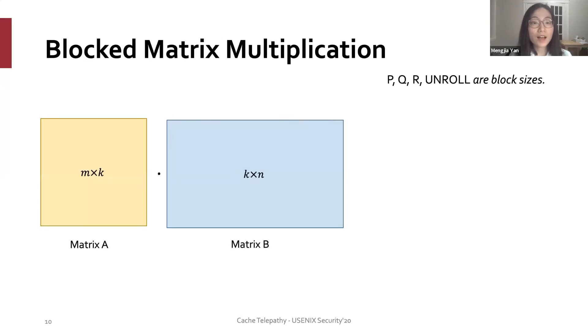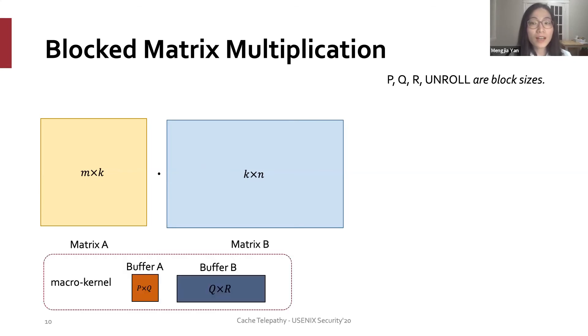Here is how the blocked GEMM works. In order to multiply m by k matrix A and the k by n matrix B, the algorithm tries to use a micro kernel on the p by q block and the q by r block. This micro kernel is generally written in assembly code. The block sizes are picked so that the p by q block fits in the L2 cache and the q by r block fits in the L3 cache.